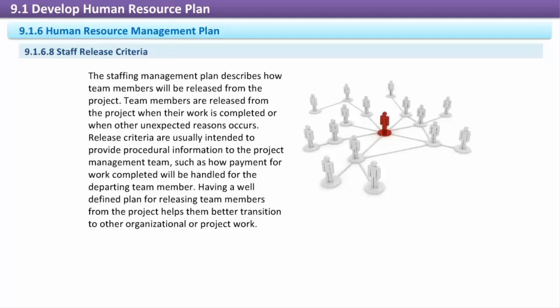Staff Release Criteria: The staffing management plan describes how team members will be released from the project. Team members are released from the project when their work is completed or when other unexpected reasons occur. Release criteria are usually intended to provide procedural information to the project management team, such as how payment for work completed will be handled for the departing team member. Having a well-defined plan for releasing team members from the project helps them better transition to other organizational or project work.